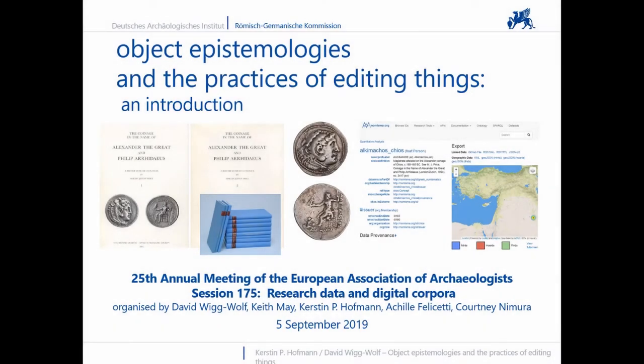How can ecological objects take us from the remains of the past in our work to good reusable research data, but without losing the objects' relationships with their creation and context or their specifics? How do we, for all our fascination with digitization and big data, avoid falling into the positivist trap?